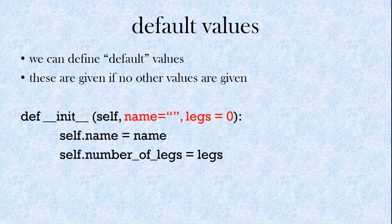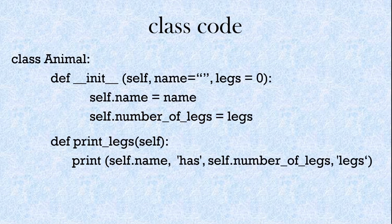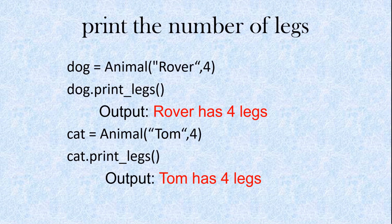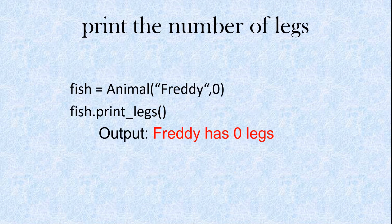So we've got our __init__ method, and here we construct the variables self.name and self.number_of_legs. When we print, we print 'self.name has self.number_of_legs legs'. So dog equals animal('Rover', 4) — name is Rover, legs four — output: 'Rover has four legs' when we call the print_legs method. Cat equals animal('Tom', 4) — print_legs gives 'Tom has four legs'. Fish Freddy: 'Freddy has zero legs'.